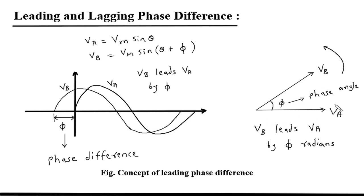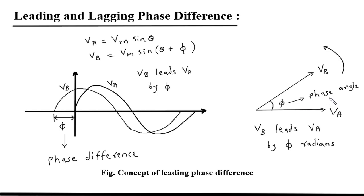Here we can see the Phasor rotates in a counter-clockwise direction. Vb leads Va by Phi. Since Vb is leading, it will be on the upper side. This Phi is the phase angle — in the waveform it is phase difference, and in the Phasor Diagram it is phase angle. This is the concept of leading phase difference.